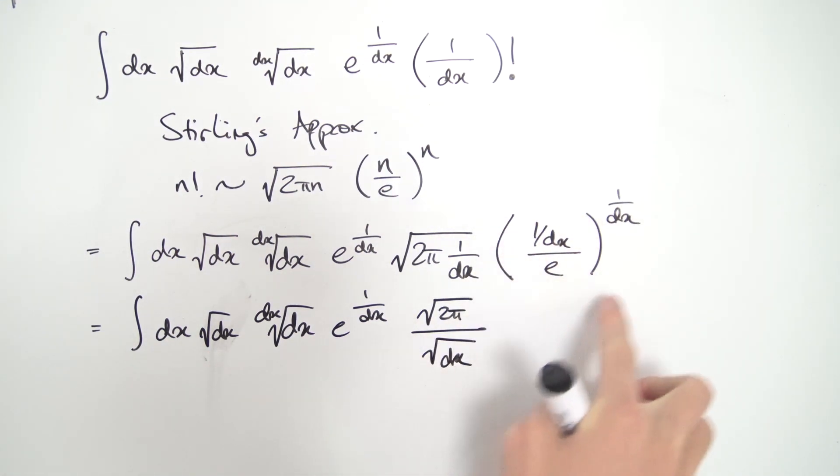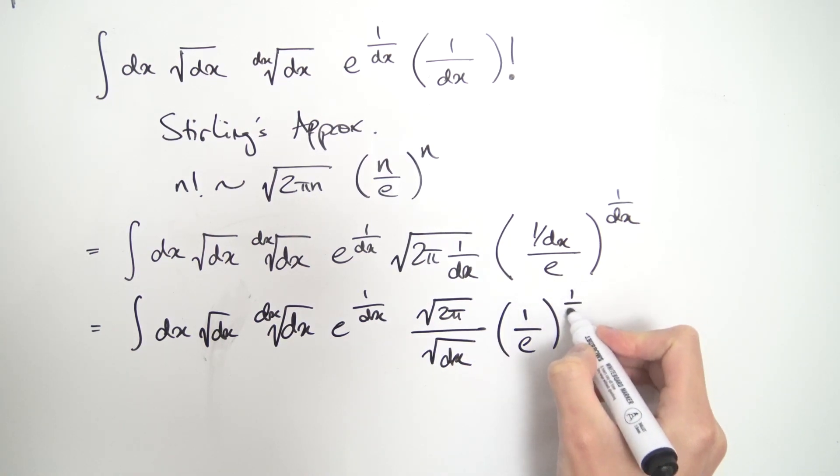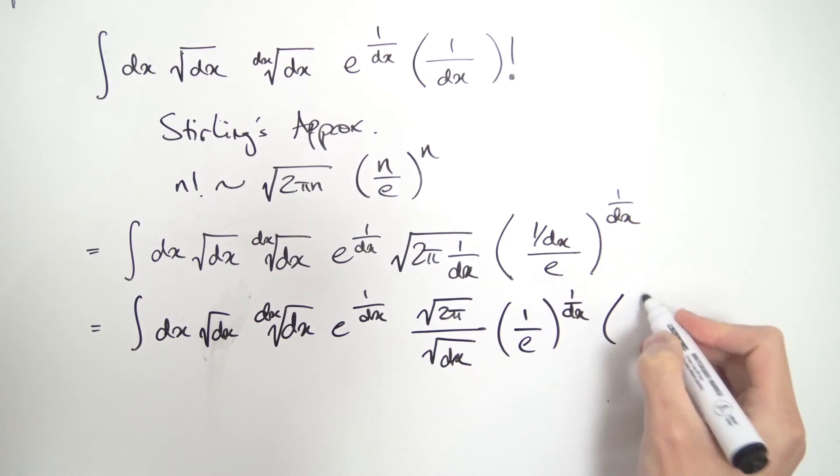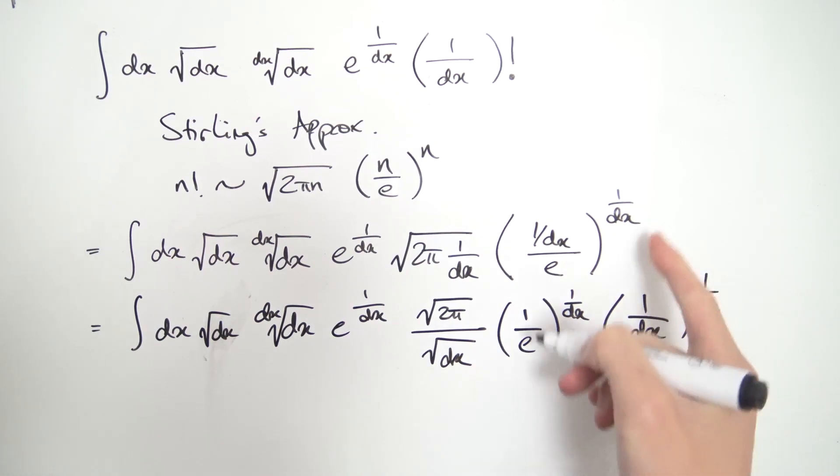And over on this mess over here, what are we going to get? We can split this up a little bit across these fractions. So we have 1 over e, raised to the 1 over dx. And finally, 1 over dx, raised to the 1 over dx. So just splitting up the power.